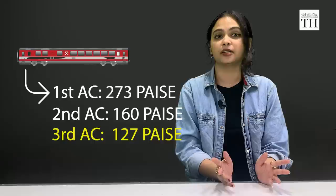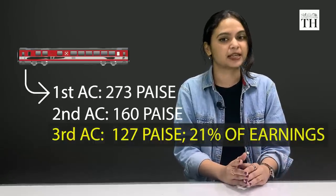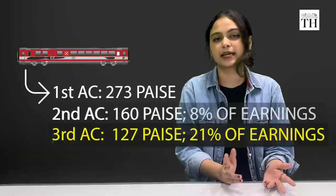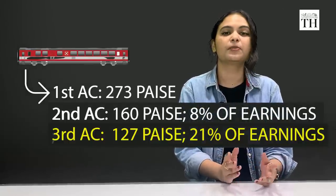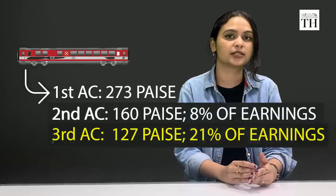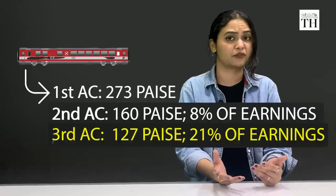And yet, like I said earlier, the third AC manages to contribute 21% of total earnings, while second AC forms just 8% of ticket sales. So despite relatively lower charges, third AC clearly beats the other AC coaches in revenue share.